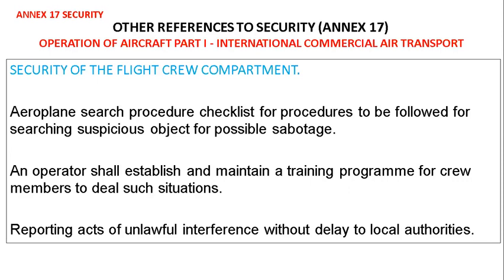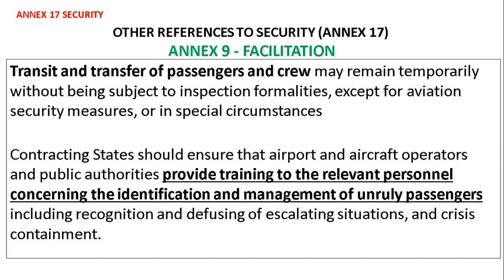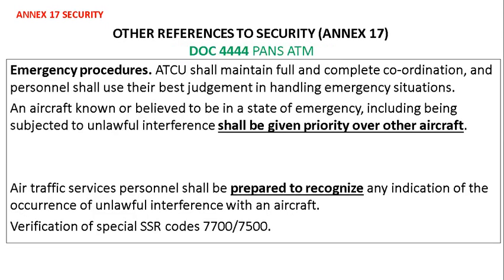Operation of aircraft — international commercial air transport: regarding security of the flight crew compartment, an aeroplane search procedure checklist shall be established for procedures to be followed when searching for suspicious objects for possible sabotage. An operator shall establish and maintain a training program for crew members to deal with such situations. Reporting acts of unlawful interference without delay to local authorities is required. As per Annex 9 facilitation, transit and transfer passengers and crew may remain temporarily without being subject to inspection formalities, except for aviation security measures. States should ensure that airport and aircraft operators and public authorities provide training to relevant personnel concerning identification and management of unruly passengers.